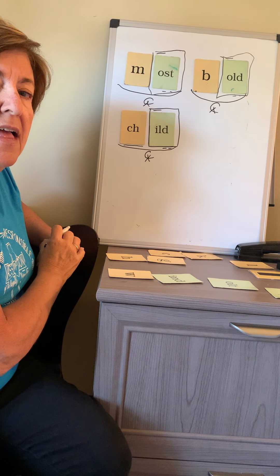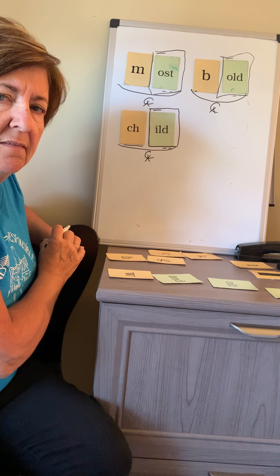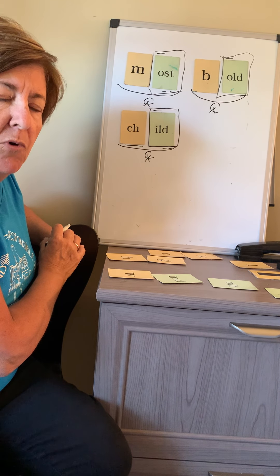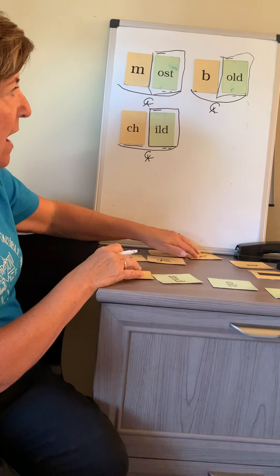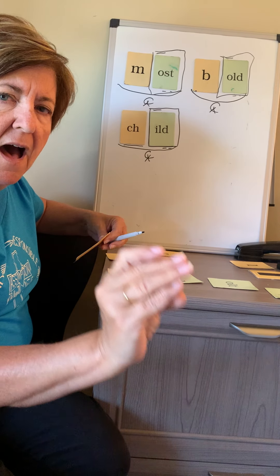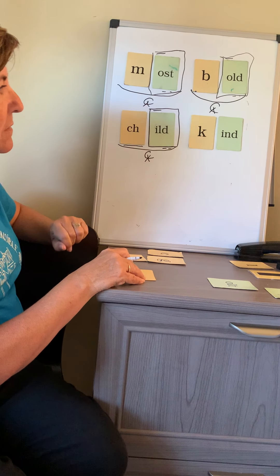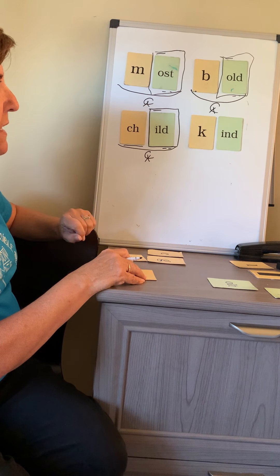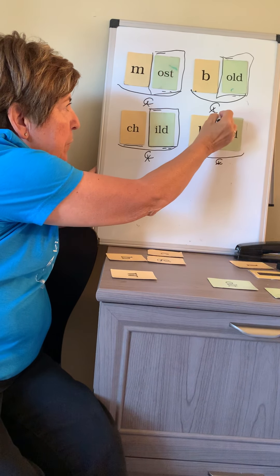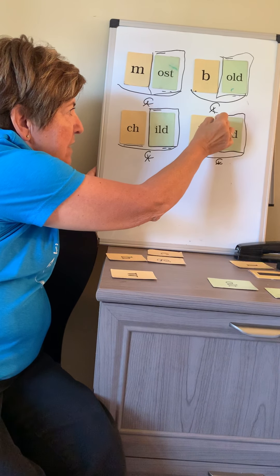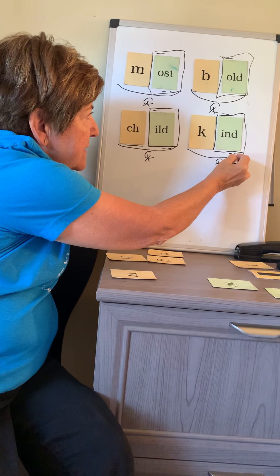Your next word to practice is the word KIND. I hope you will always be KIND. Repeat it, tap it, write it, and mark it. KIND. Check your spelling — I hope you used a K, not a C. I scoop it — one syllable, it's a closed exception. A box around the glued sound — these are not pretty boxes, but they work. Because the I is long, and it has an N-D blend.